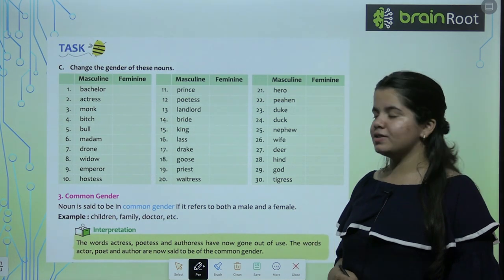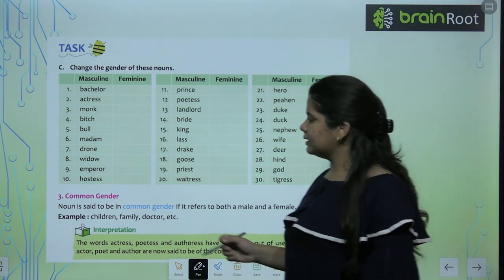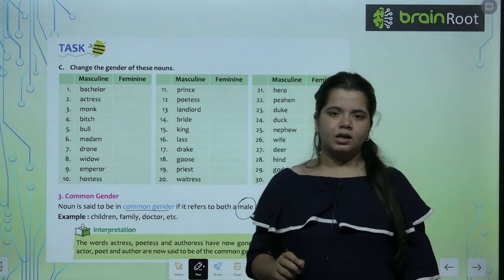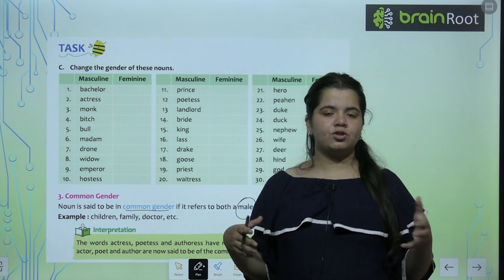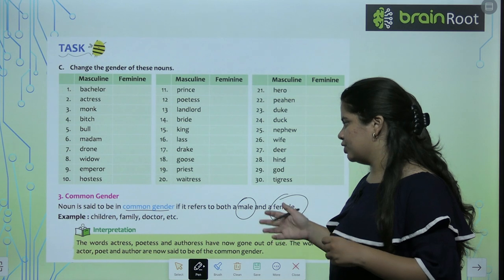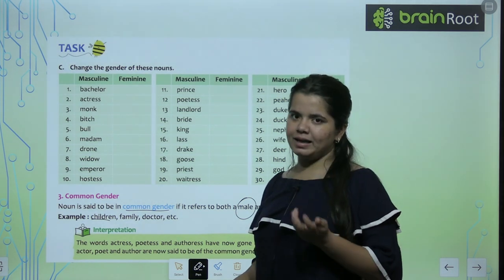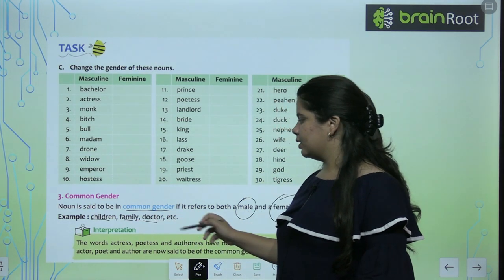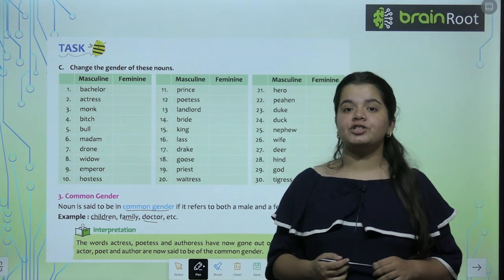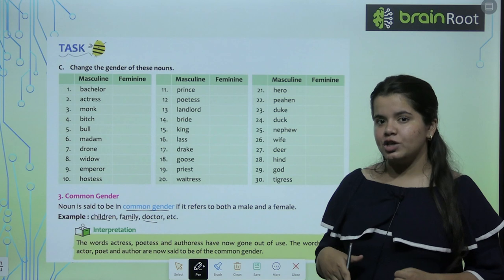The third type of gender that we have is common gender. A noun is said to be in common gender if it refers to both male and female. Common gender kab hoga? Jab ham dono males aur females dono ki baat karenge. Jaise doctor — agar mai generally bolu 'I am going to the doctor,' the doctor male bhi ho sakta hai and female bhi. So doctor ek common gender hai. Jaise children — male children bhi ho sakta hai and female also. Family, doctor — ye sare humare common gender hain. Teacher bhi: teacher masculine gender ke bhi ho sakta hai and feminine gender ke bhi.